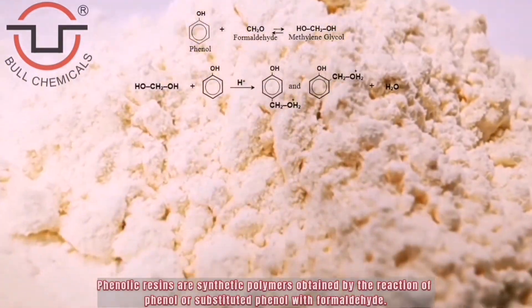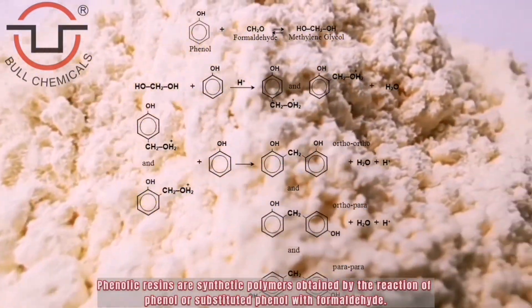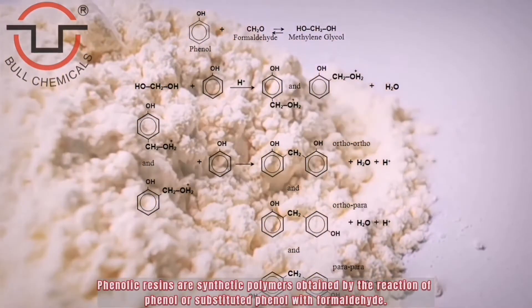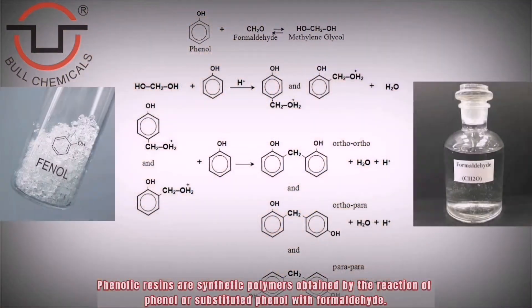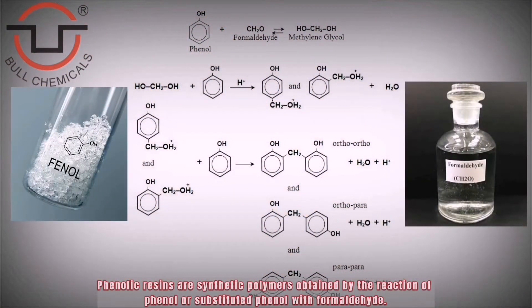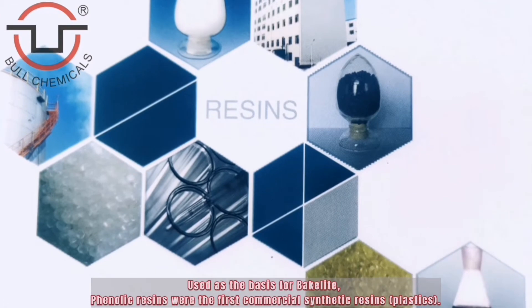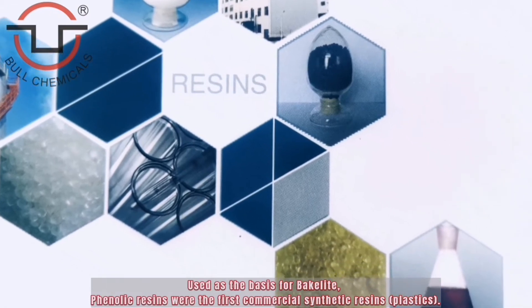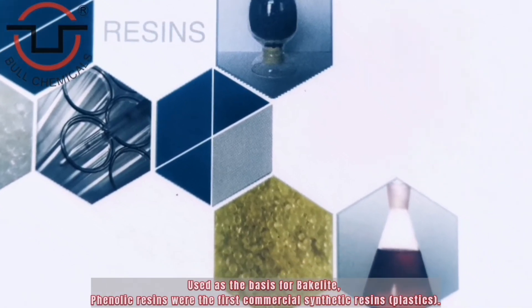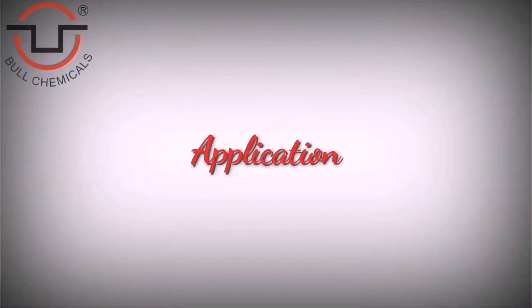Phenolic resins are synthetic polymers obtained by the reaction of phenol or substituted phenol with formaldehyde. Used as the basis for Bakelite, phenolic resins were the first commercial synthetic resins.